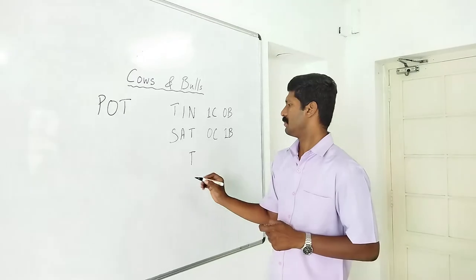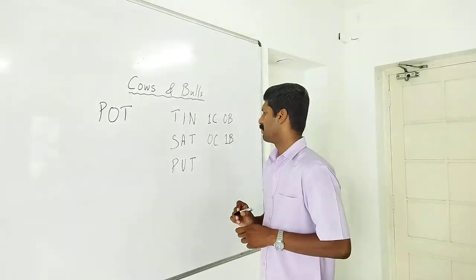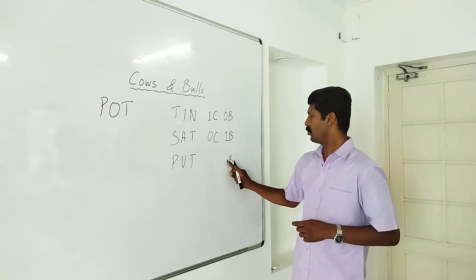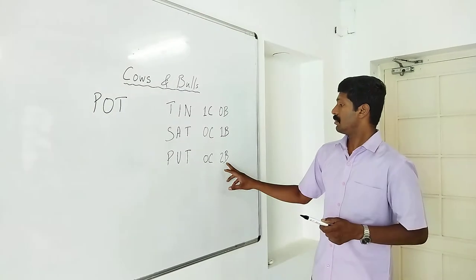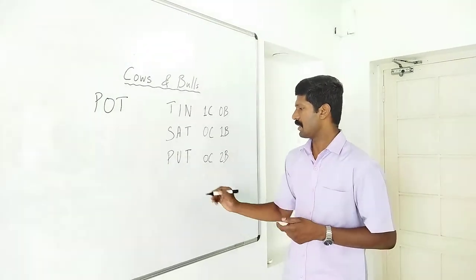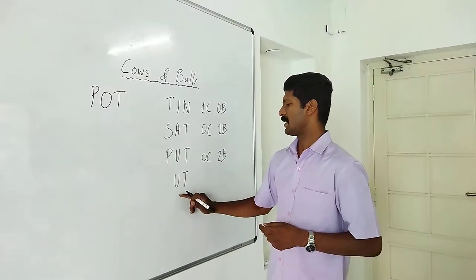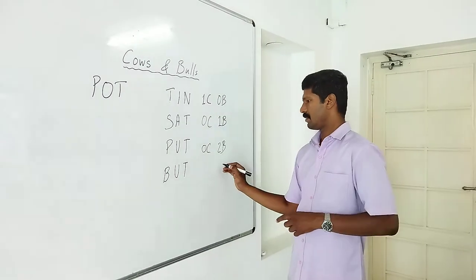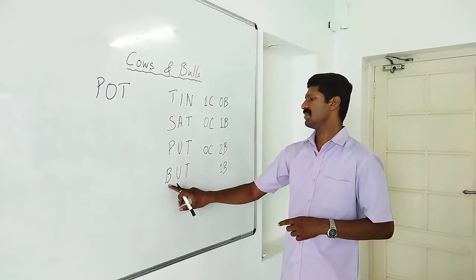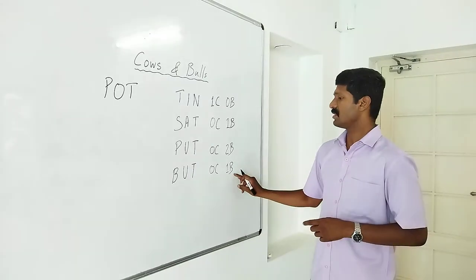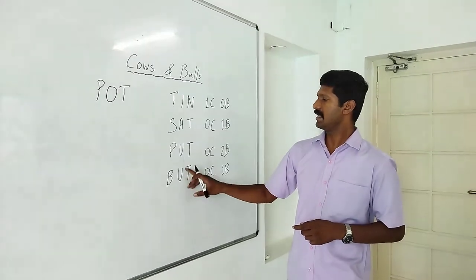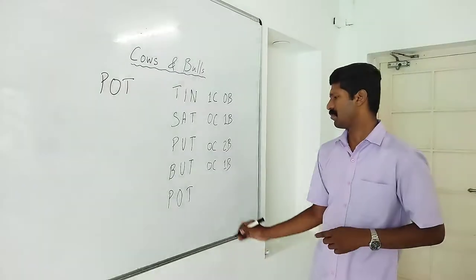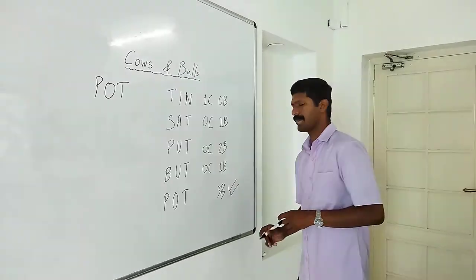So I can write a word like PUT. Now T — I will give you one bull. Now PU is also correct, so I will give you two bulls, zero cows. So you can keep guessing. Maybe you correct it — you got one bull for T position, zero cows. So you will try to change U to P. Then I will give you three bulls — that's the right answer.